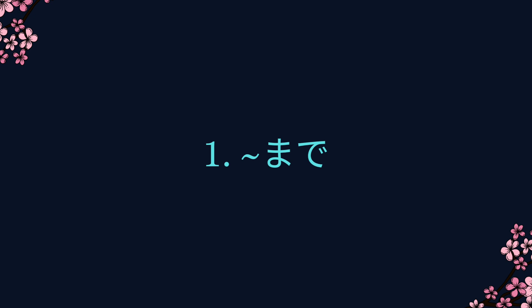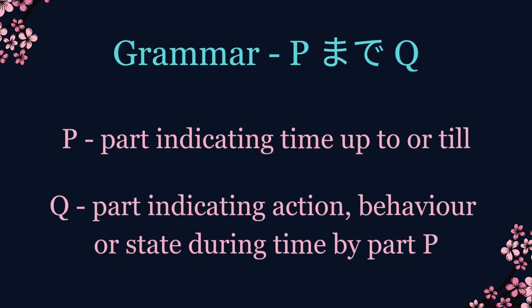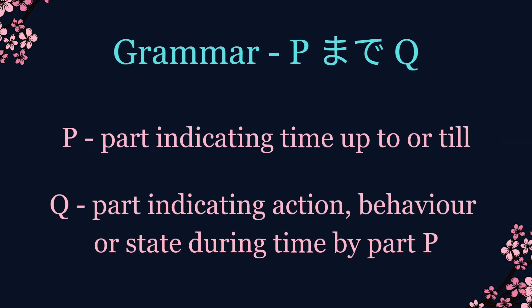First, まで (made). When we use まで, it shows the time up to which a continuous action, behavior, or state occurs. It can be translated as 'up to this time' or 'till'. The grammar structure is: P まで Q, where P shows the time limit and Q shows the continuous action, behavior, or state during that time.